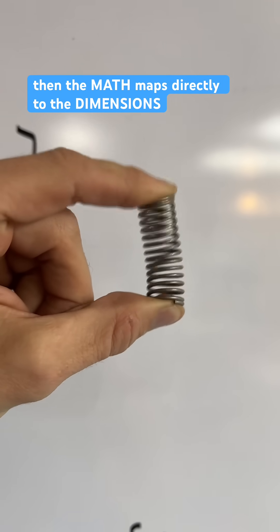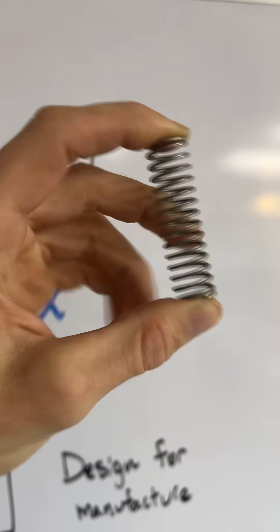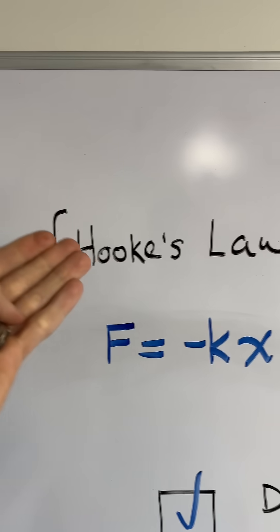When the first person built a spring like this and it behaved linearly, the discovery is that it behaves exactly like the law. It can simplify millions of future designs.